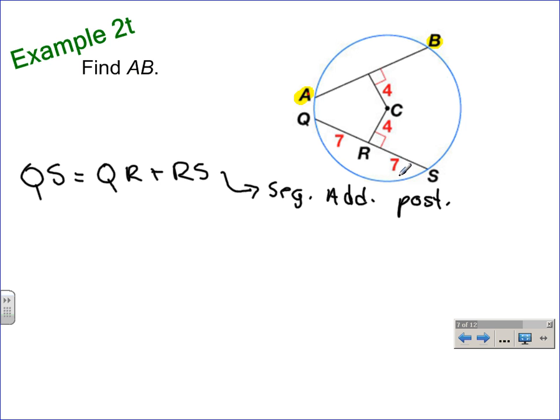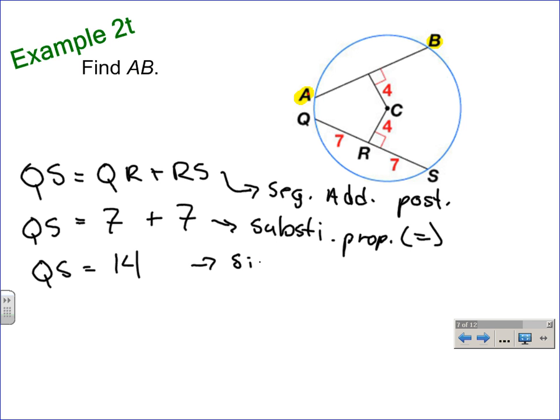Kind of an informal proof here to solve this problem. Using the substitution property of equality, we will substitute in the measure of segment QR. QR is 7, plus the measure of segment RS, which is 7. And that's by the substitution property of equality. We simplify this, so we find the measure of QS is equal to 14. And if you were to have to write this as a proof, you would write simplify there.